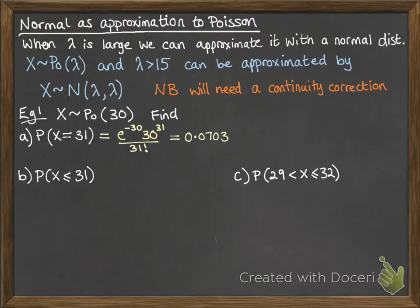If you want to do the probability that x is less than or equal to 31, you don't really want to do 0 and 1 and 2 and 3 and all the way up to 31 and add them together. So we can approximate this with a normal distribution because lambda is bigger than 15, and that makes the calculation much, much easier.